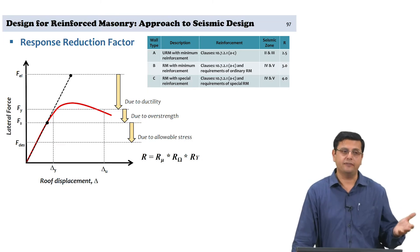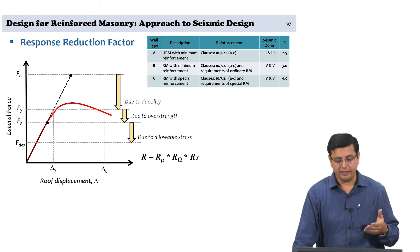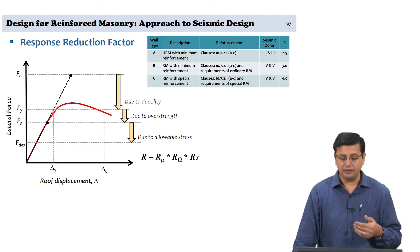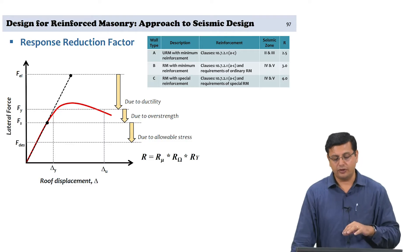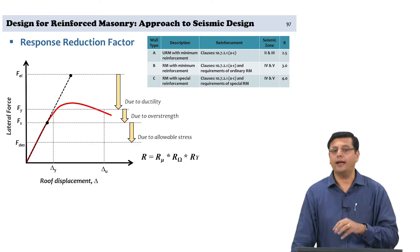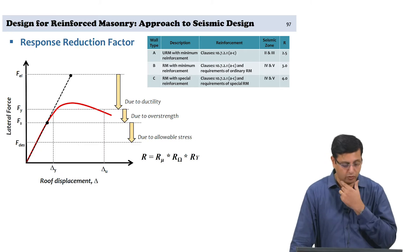We are basically looking at arriving at a distribution of demand — axial forces, bending moments, and shear forces — for a combination of earthquake load, dead load, and imposed load or live load.